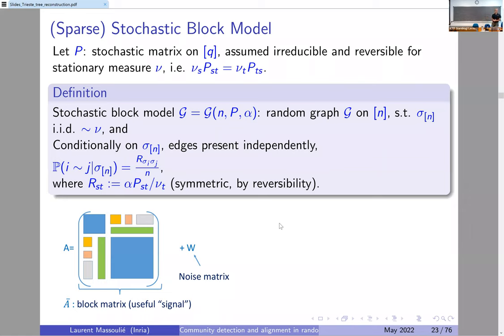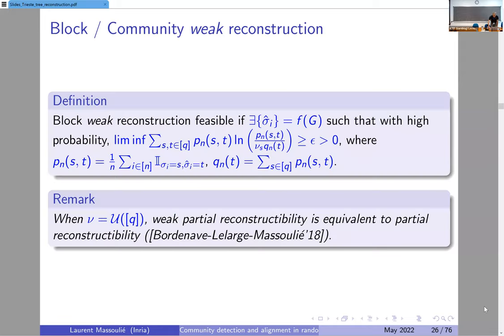Good afternoon. We are back with our stochastic block model — this random graph model which has an underlying block structure. Our aim is to reconstruct this block structure from the observation of the graph. We left off yesterday where I was telling you that the classical methods we want to use are spectral methods, which process the adjacency matrix of the graph, extract eigenvectors associated with the largest eigenvalues, and then cluster according to the entries. So why does that fail in the sparse setting we are considering here?